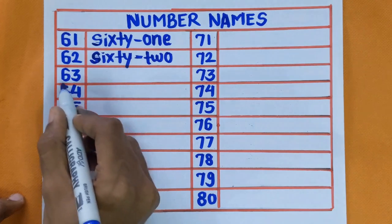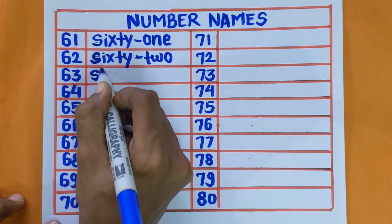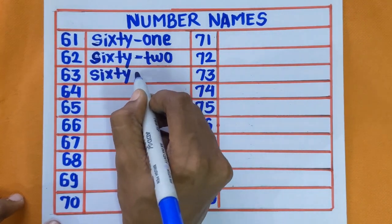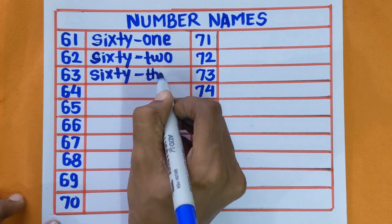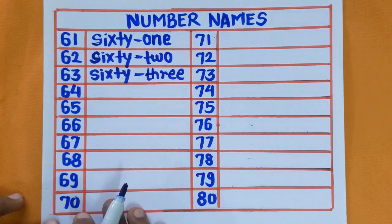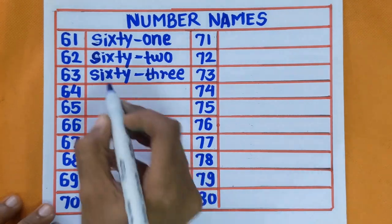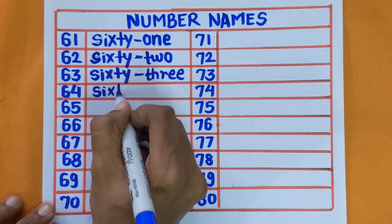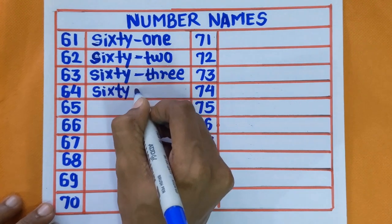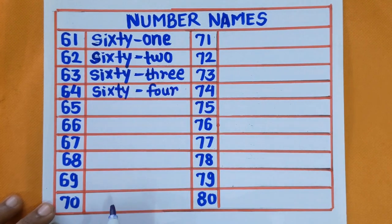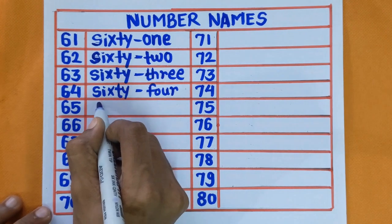Next is 63 — S-I-X-T-Y-T-H-R-E-E. 63. Next is 64 — S-I-X-T-Y-F-O-U-R. 64. Next number is 65.